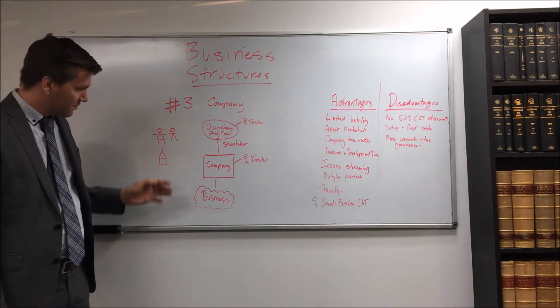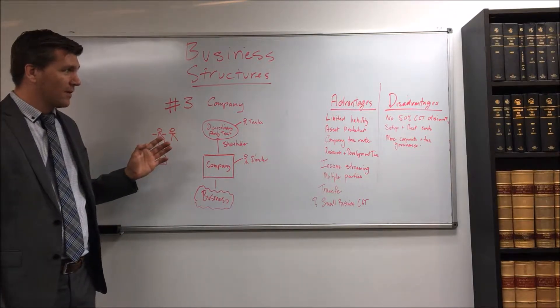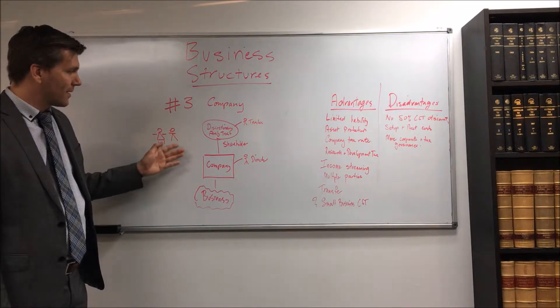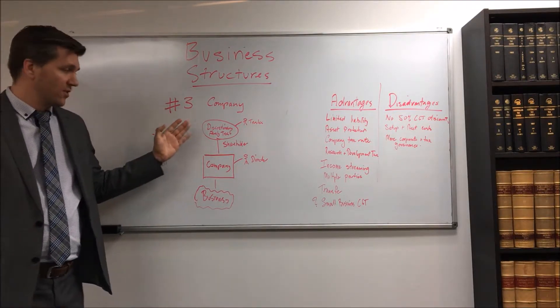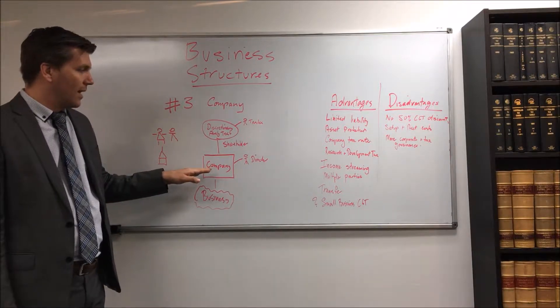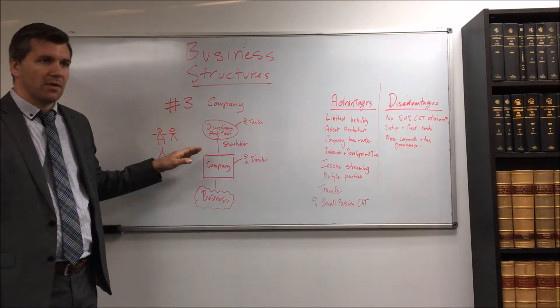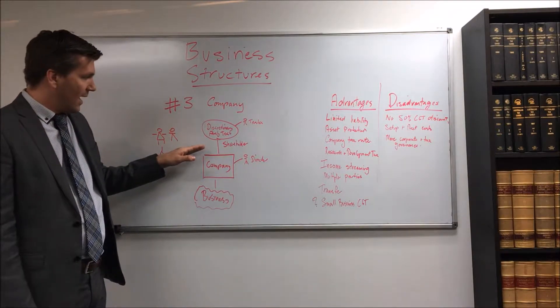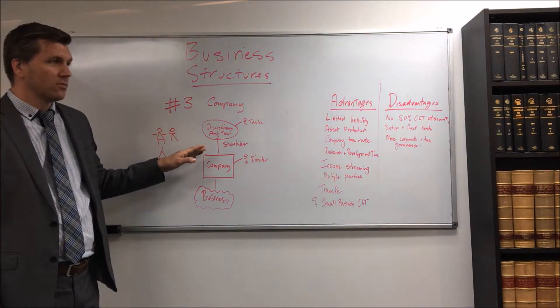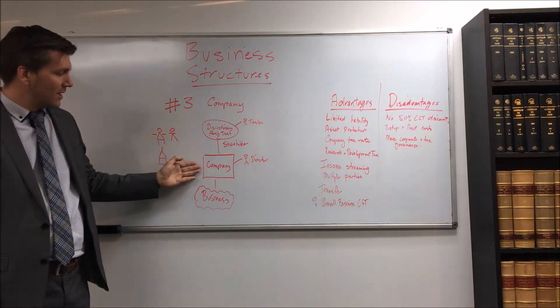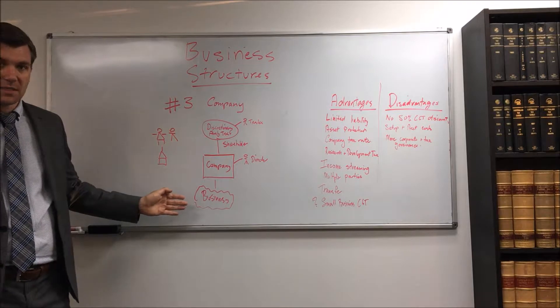So the company is one of the most common business structures and today I will be talking about a company owned by a discretionary trust. Now a company will have directors and they will control it from day to day, including perhaps the company's secretary, and the company shares will be owned by some shareholders. The company itself will own and operate the business.